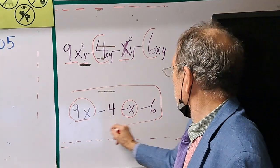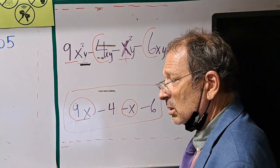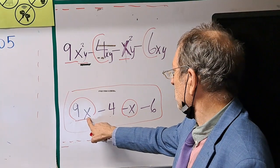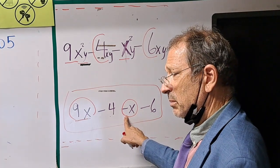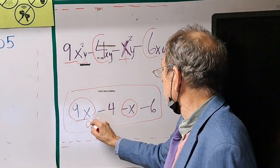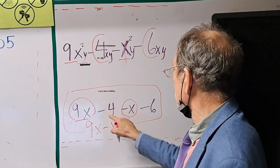If we had done it this way, we know what to do. You said something about what? Combine them? Put them together. So we would go 9x minus x. What about these?